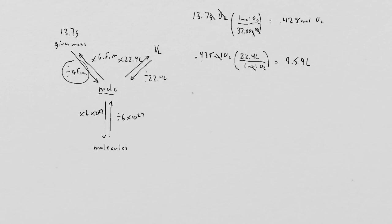If I want to know the number of molecules, I can take my 0.428 mole of O2, and I can multiply that to get the molecule. So I go, 1 mole of O2 is 6.02 times 10 to the 23rd molecules.